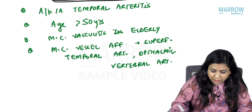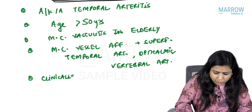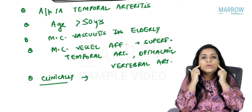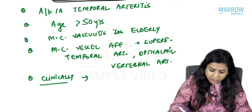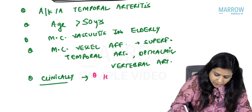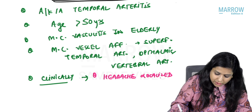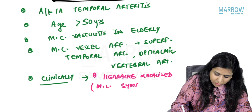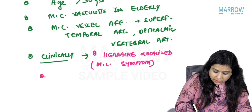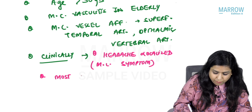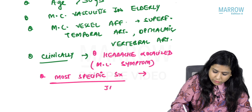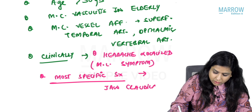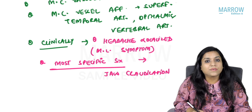The temporal artery runs over your temporal area. Therefore, the most common symptom is localized headache. The most specific symptom of giant cell arteritis is jaw claudication — pain in the jaw when the patient opens the jaw.